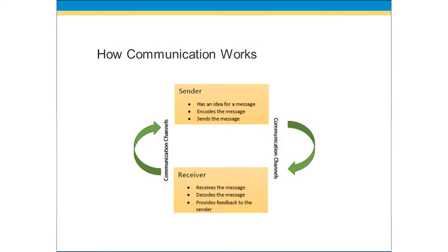Let's begin with how communication works. Communication is the transfer of information from one communicator to another through the use of written or spoken words, symbols, touch, or gestures. For communication to be effective, both parties need to understand the message that's being transferred. All communication relies on the fact that there is a sender and a receiver.